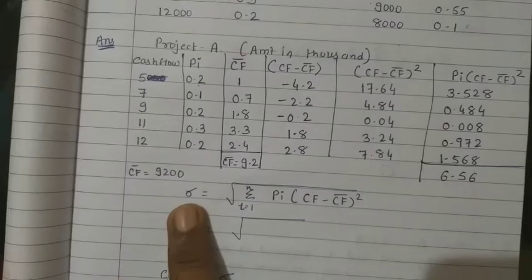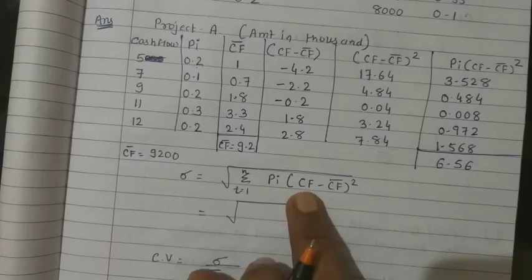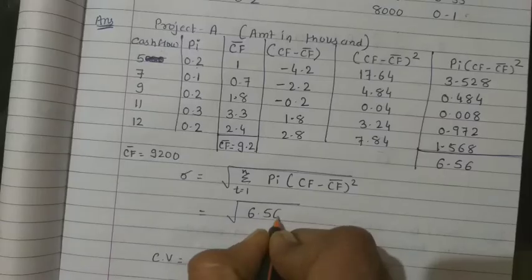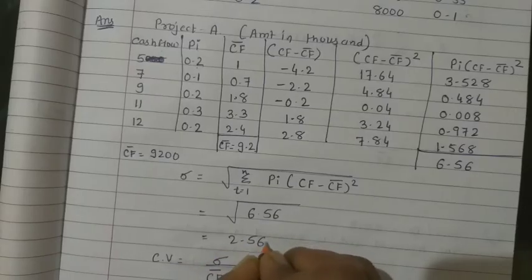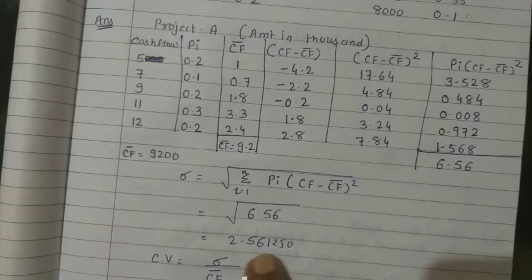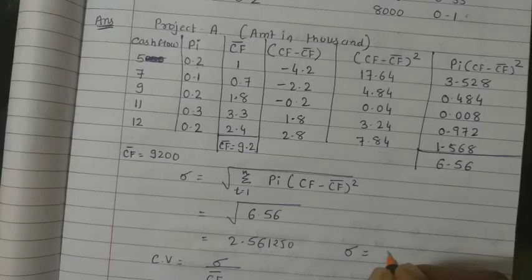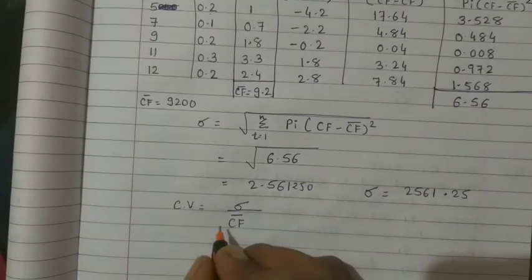Standard deviation formula: under root of summation (PI into (CF minus CF-bar) squared). Putting summation = 6.56 directly, the answer is 2.561250. Multiplying by 1000 (since amounts were in 1000), standard deviation = 2561.25.